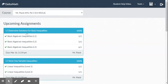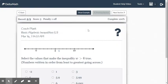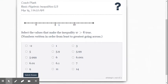In this video we're going to determine solutions for basic inequalities using the Delta Math program, so we're going to the basic algebraic inequalities level one. So here's our problem, gives us a number line, select the values that make the inequality w is greater than 6 true.